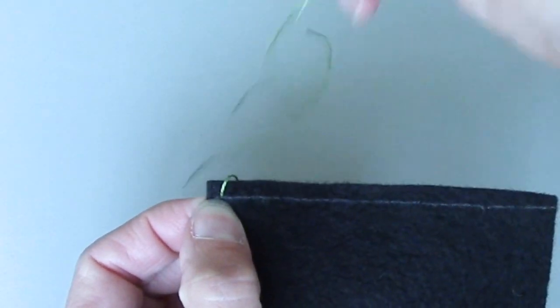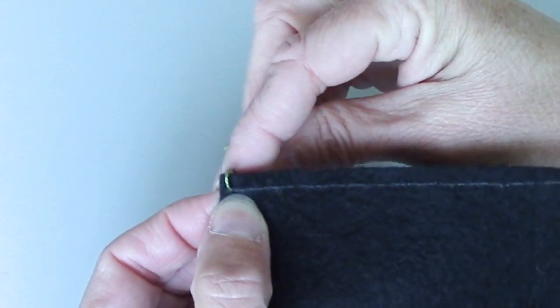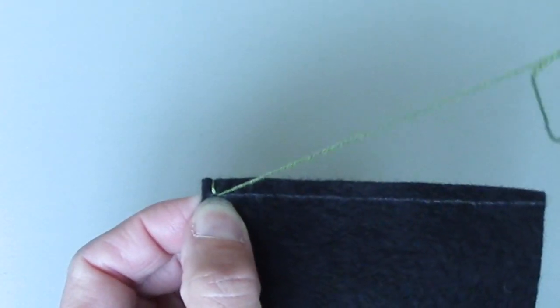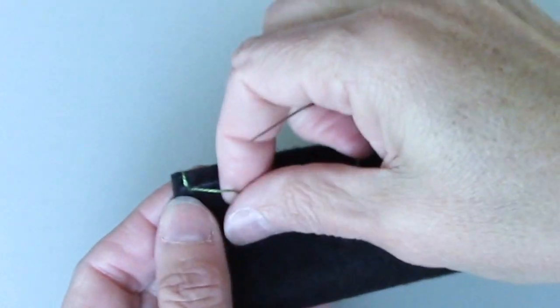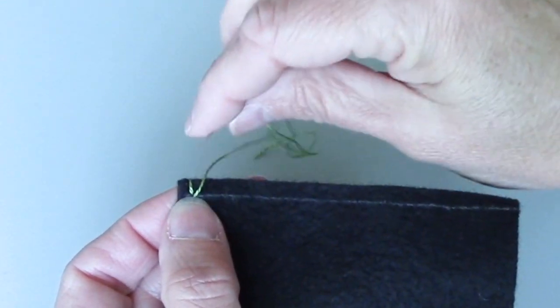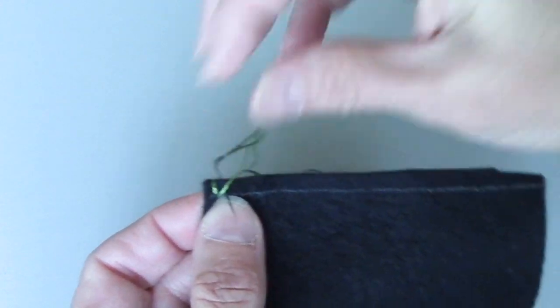Then I'm going to take my thread up and over the edge of the fabric, bring my needle back through in the same point where I came out to start with. Then I am going to go over a bit, and I'm going to bring my needle out on the line.